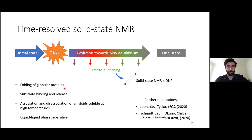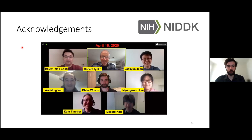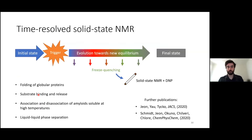Systems we imagine applying time-resolved NMR to include the folding of globular proteins, substrate binding and release, oligomerization of peptides, and liquid-liquid phase separation. For further publications, I encourage you to read some of J. Kuhn's more recent papers. I'd like to thank all of my lab mates who have been working on this project — in particular Rob, J. Kuhn, Kent, and Ming — who have all done a lot of work. We have plenty of time for questions, so I'm happy to take any.